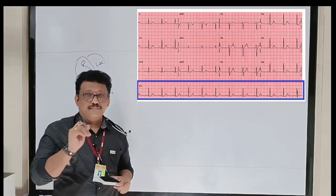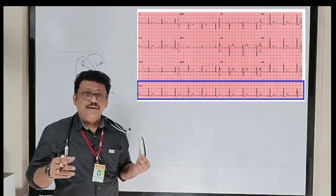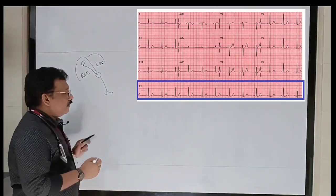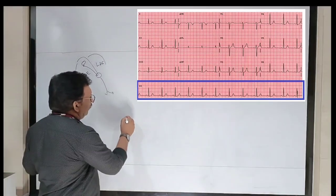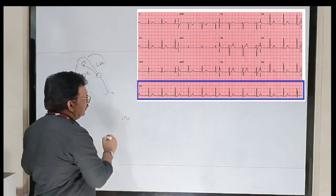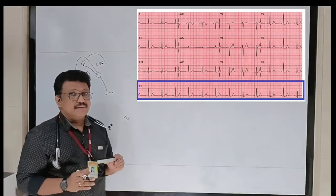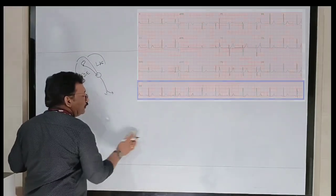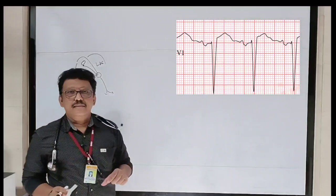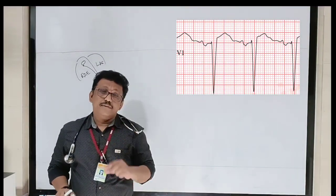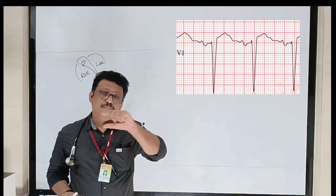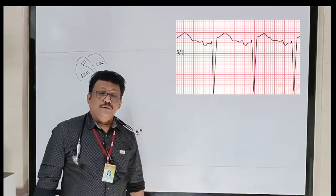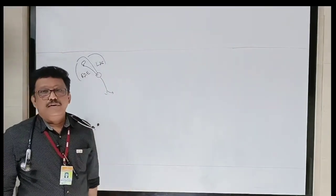In V1, the morphology of the P wave will be slightly altered — it will already be biphasic. For easy understanding we are not going into that area. We are only taking the rhythm strip in lead II. That is what you see in most ECGs — a tall P wave is P pulmonale, wide notched P waves is P mitrale.